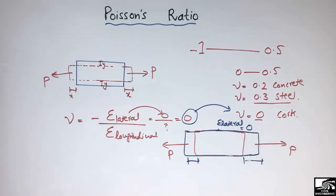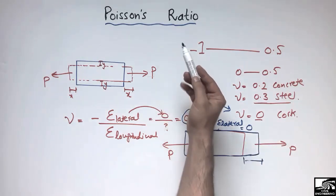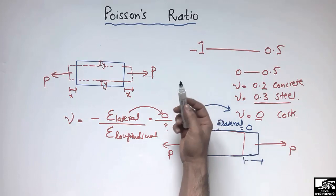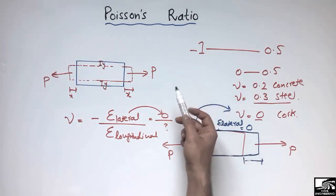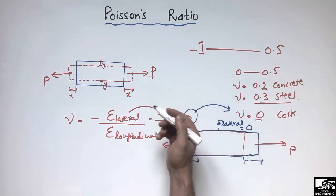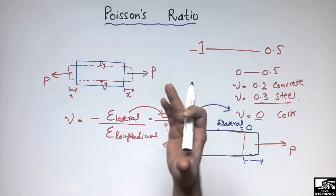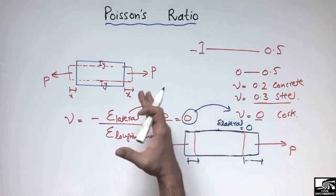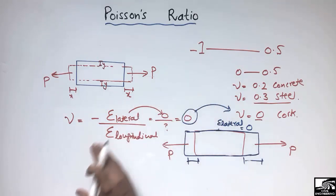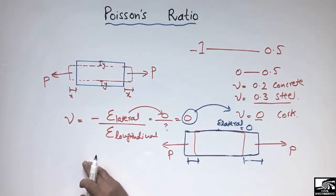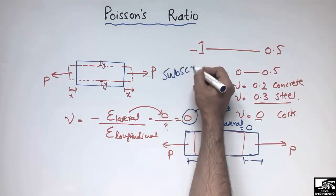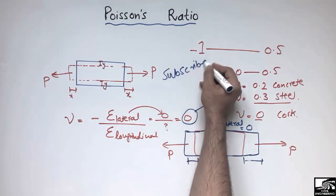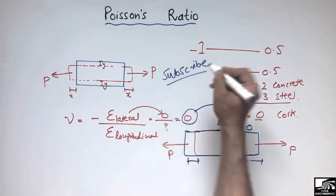If you understand the basics of the Poisson ratio — which is the measure of the Poisson effect, describing the expansion or contraction of a material when load is applied — that was all for today. Don't forget to subscribe to the channel. Thank you for watching.